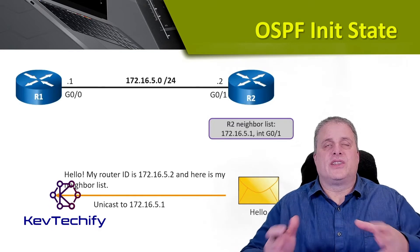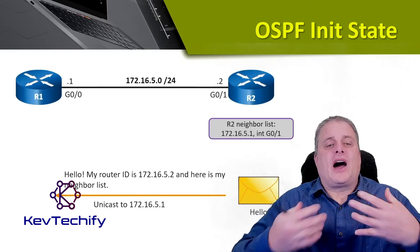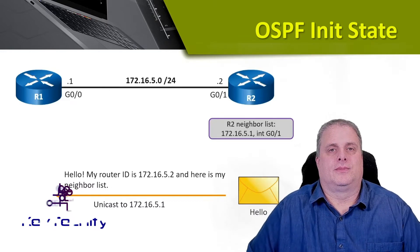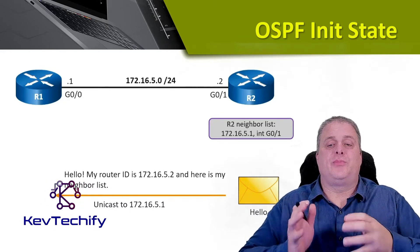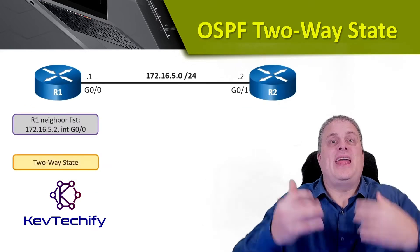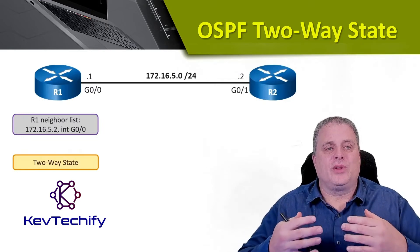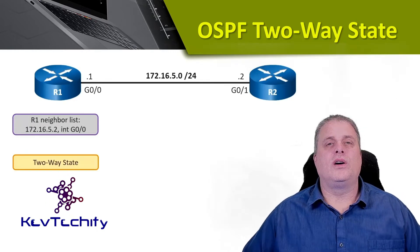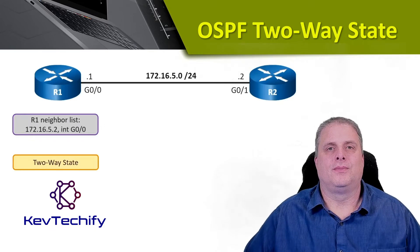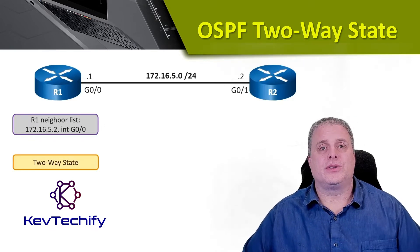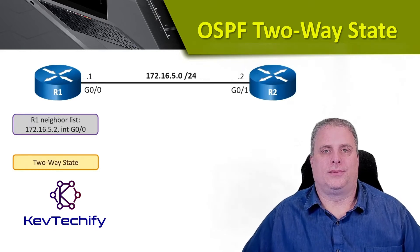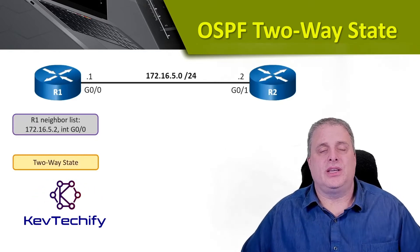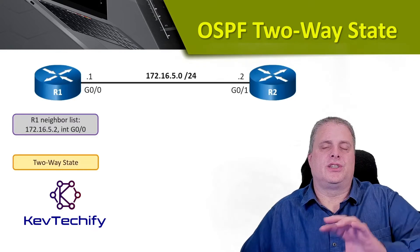When R2 sends this hello message back to us, it's going to be a unicast message directed right towards us. When R1 gets this hello message back from R2, it's going to see itself in the neighbor list. And when it sees itself in the neighbor list, R1 is going to transition into the two-way state. R1 has received a hello from R2, and in that hello it includes R2's neighbors, which also includes R1. Since we see our own router ID in R2's neighbor list, this transitions us to the two-way state.